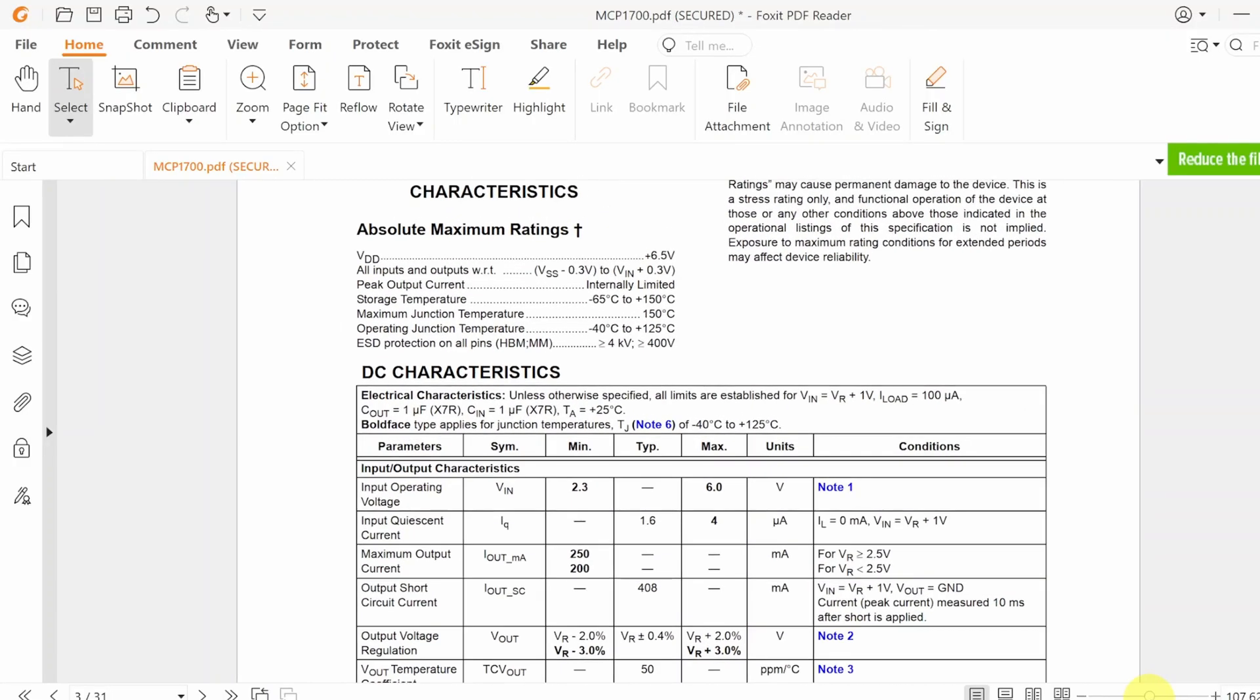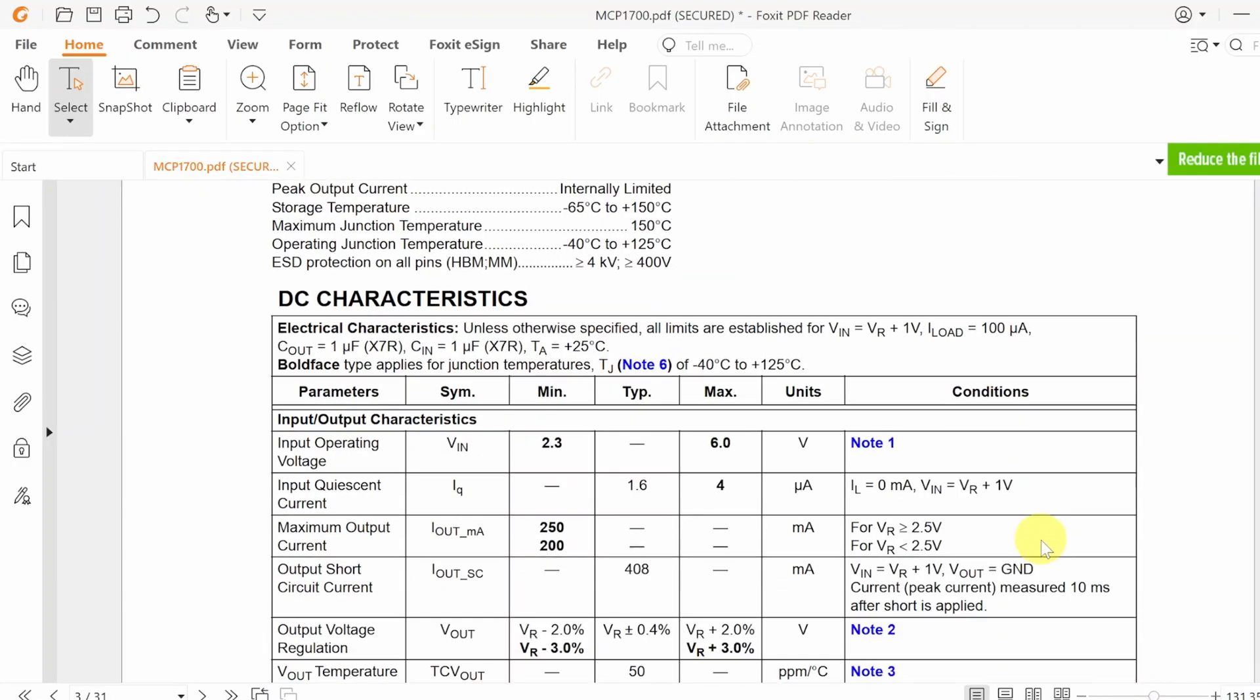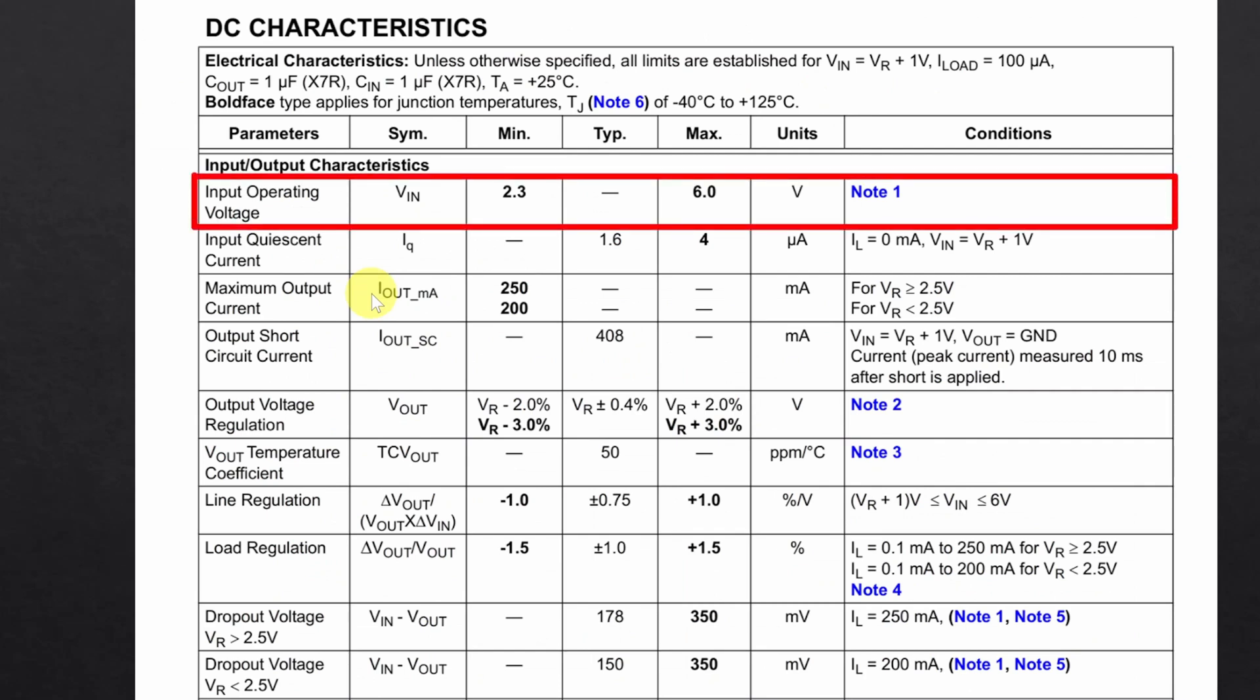Let's check out some DC parameters from the device datasheet. Input voltage minimum value 2.3V maximum 6V. 2.3V is not the minimum input voltage for the 3.3V regulator. This is the bundle datasheet and this input voltage range is for all the regulators in the MCP700 series.